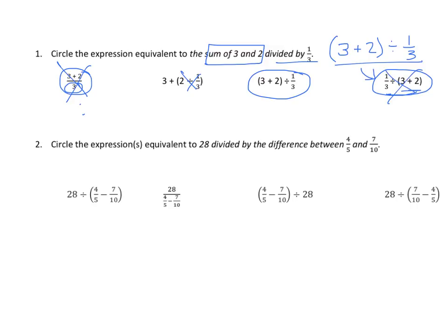If I evaluated correctly: 3 + 2 divided by 1/3 equals 5 divided by 1/3, which equals 15. The switched version gives 1/3 divided by 5, which is 1/15. As you can see, the answers are quite different.